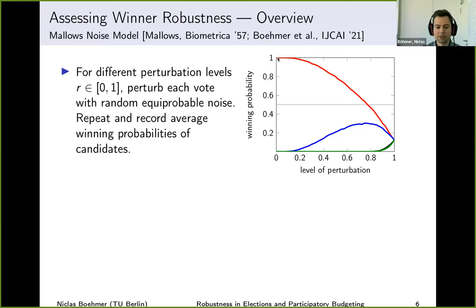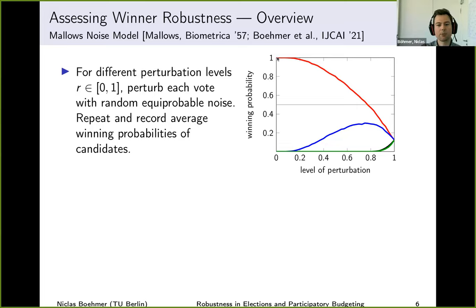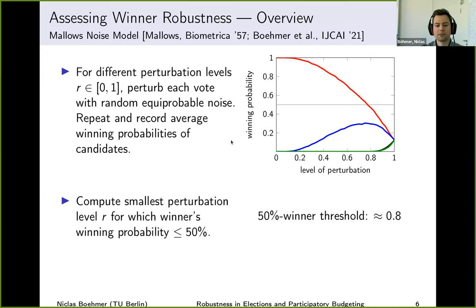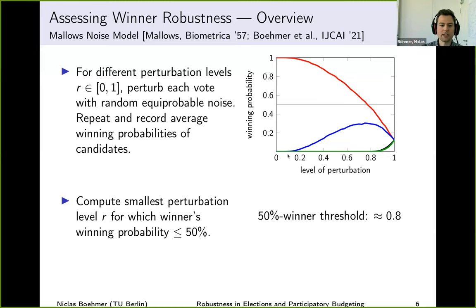This gives us line plots where each line corresponds to one candidate. The red line is the initial winner. On the x-axis we have the perturbation level — left is the original election, right means many swaps have been performed. On the y-axis we have the winning probability. By observing how quickly the winning probability of the original winner decreases, we get an estimate for its robustness. For a single number per instance, we propose the '50% winner threshold': the smallest perturbation level for which the winner's winning probability drops below 50%.